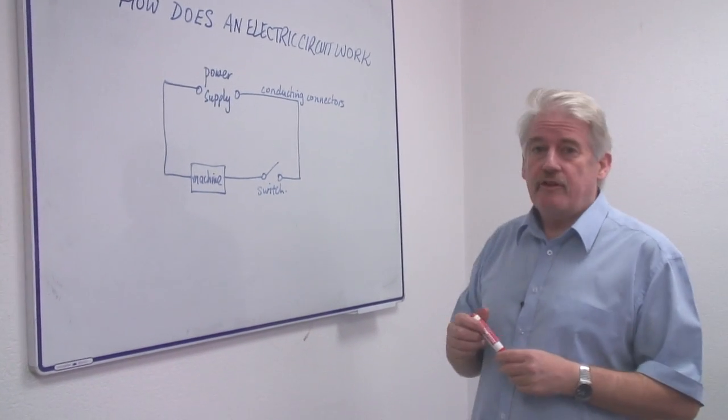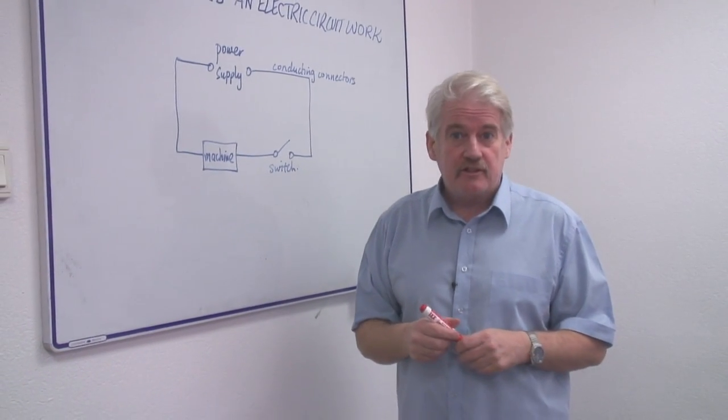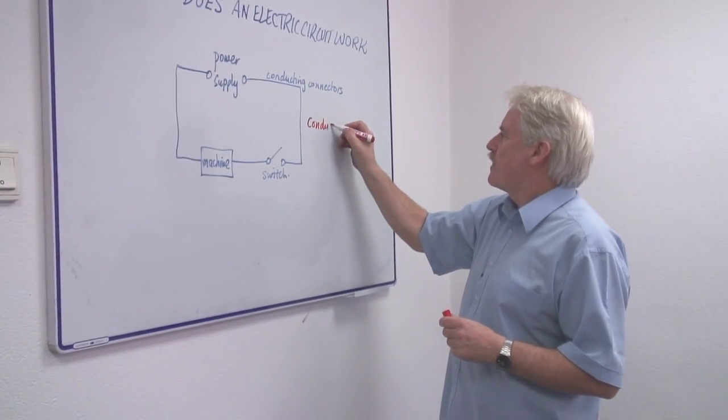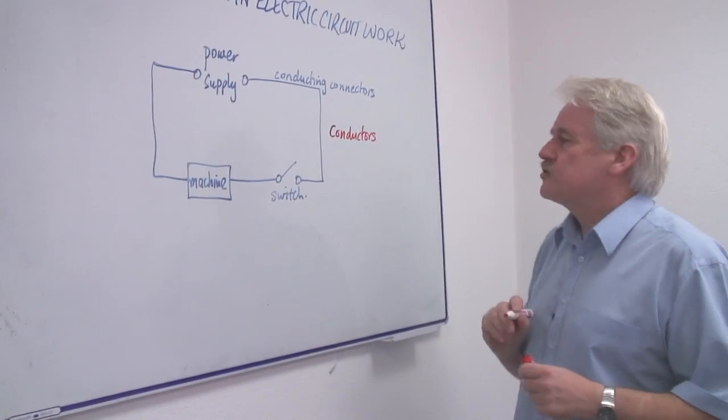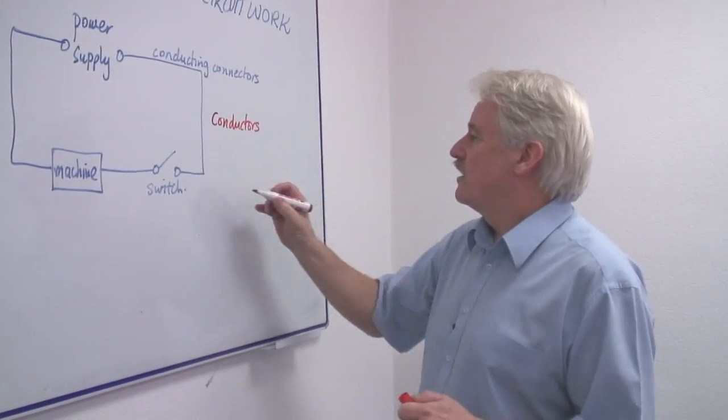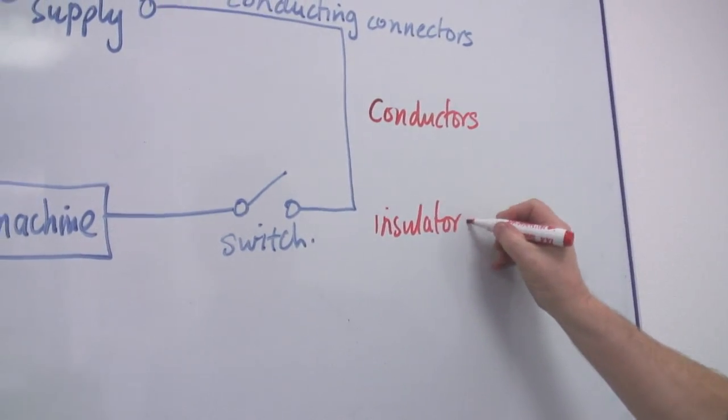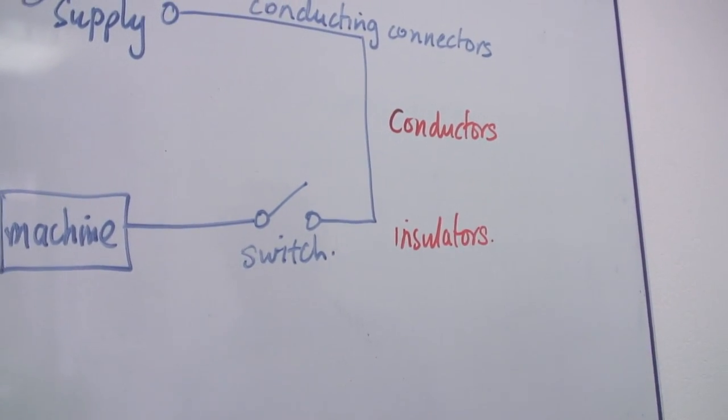we have to remember that there are certain things which conduct electricity, which we call conductors. And there are others which don't conduct, which are called insulators. Now conductors and insulators, you must know the difference between the two.